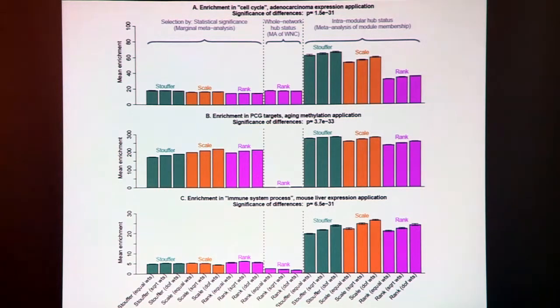Let's come to the second application. This is the aging study where we evaluate the screening strategies with respect to Polycomb group target genes. Again we find by looking at consensus module membership we greatly enrich the signal.